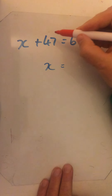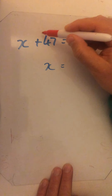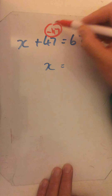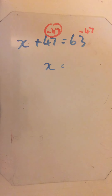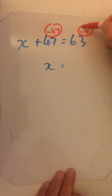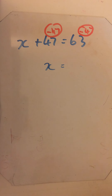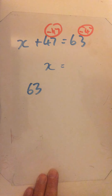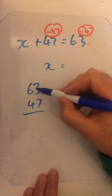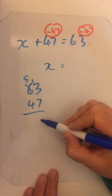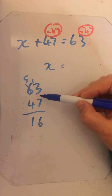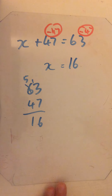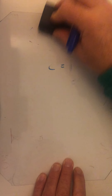Using the balance method means we have to get rid of this plus 47. If I want to be left with x, I'm going to take 47 away, and the balance method says I also have to take 47 away from the other side. So 63 take away 47 — that's 16. x is equal to 16.